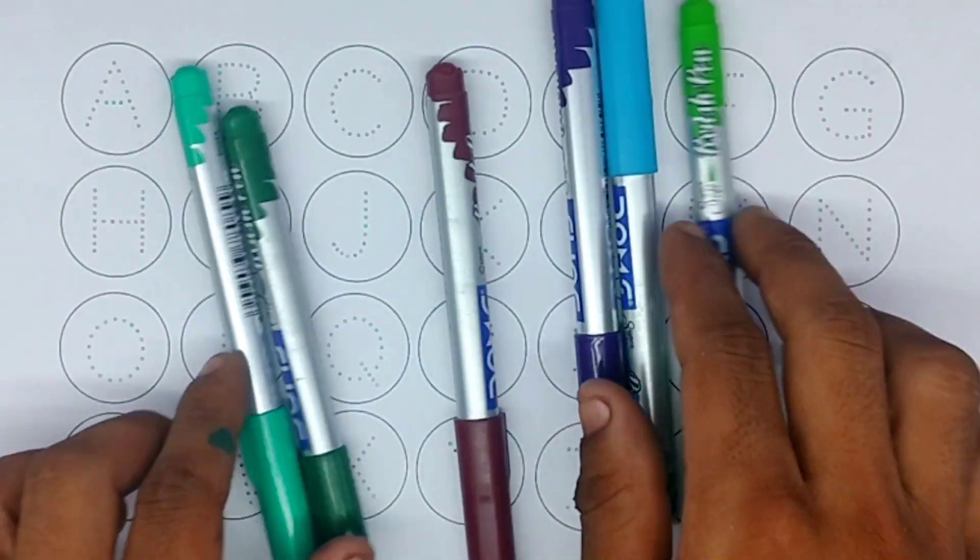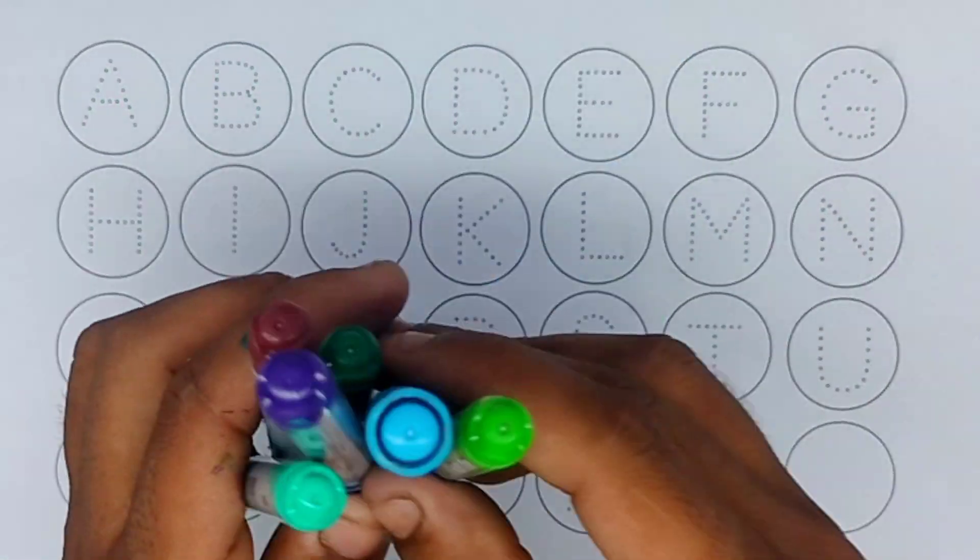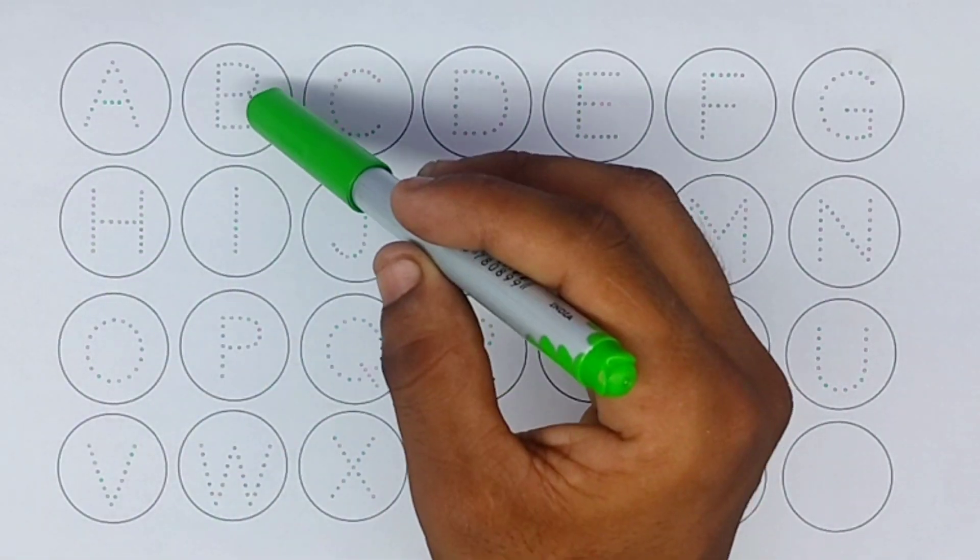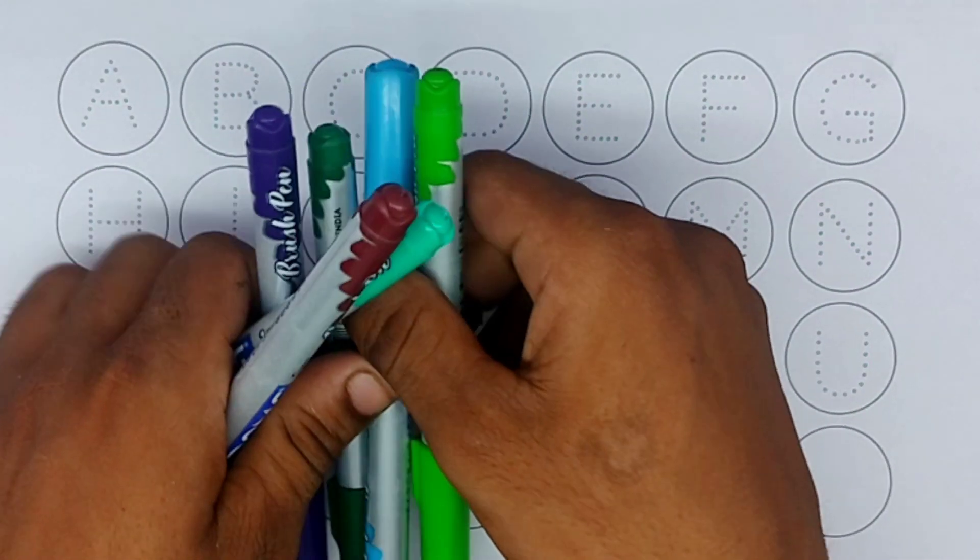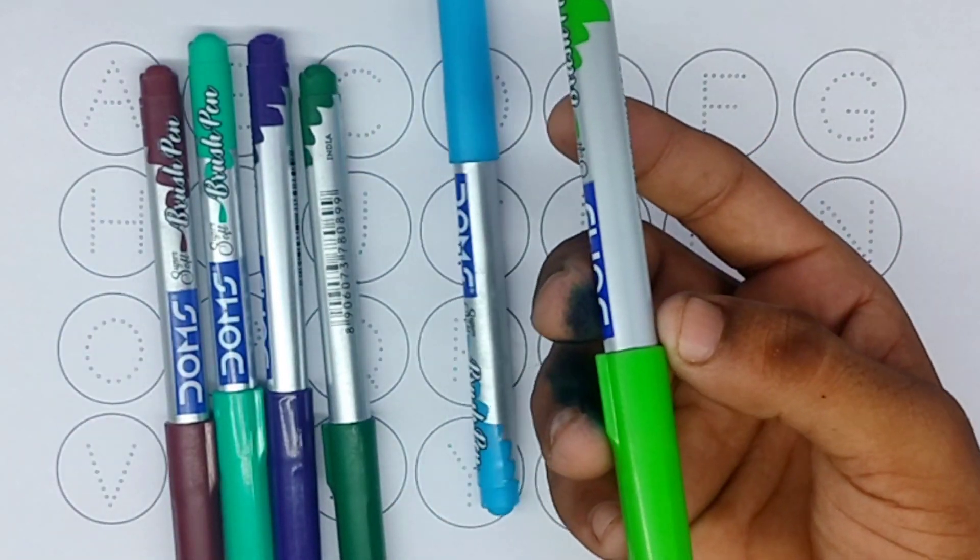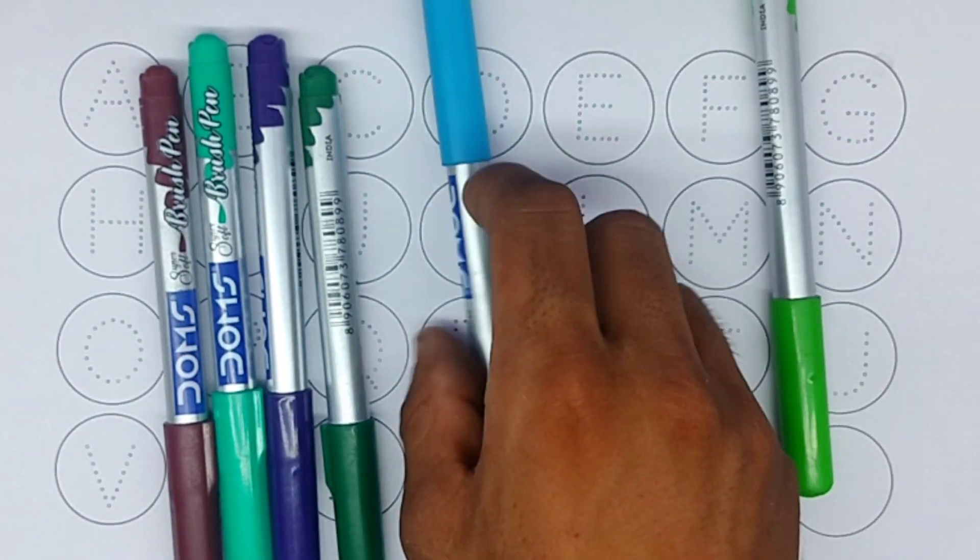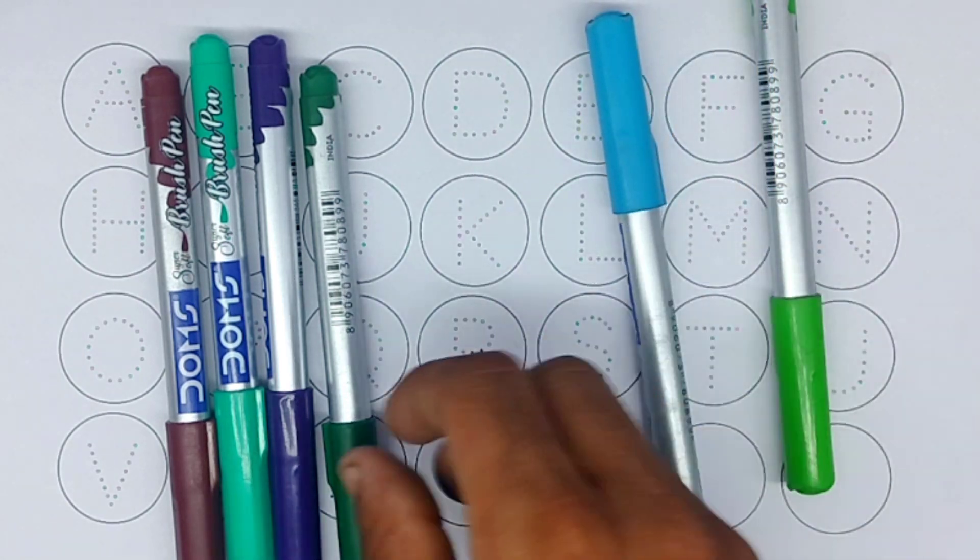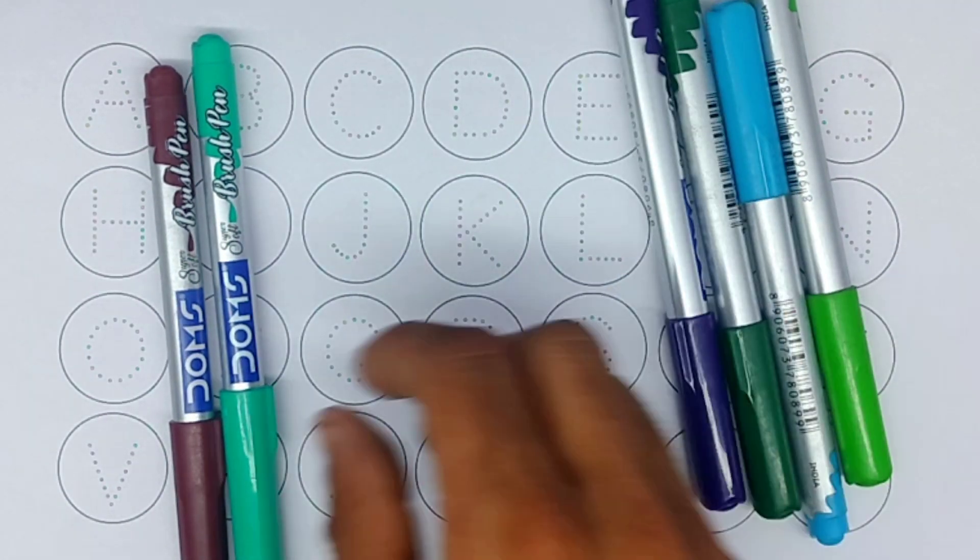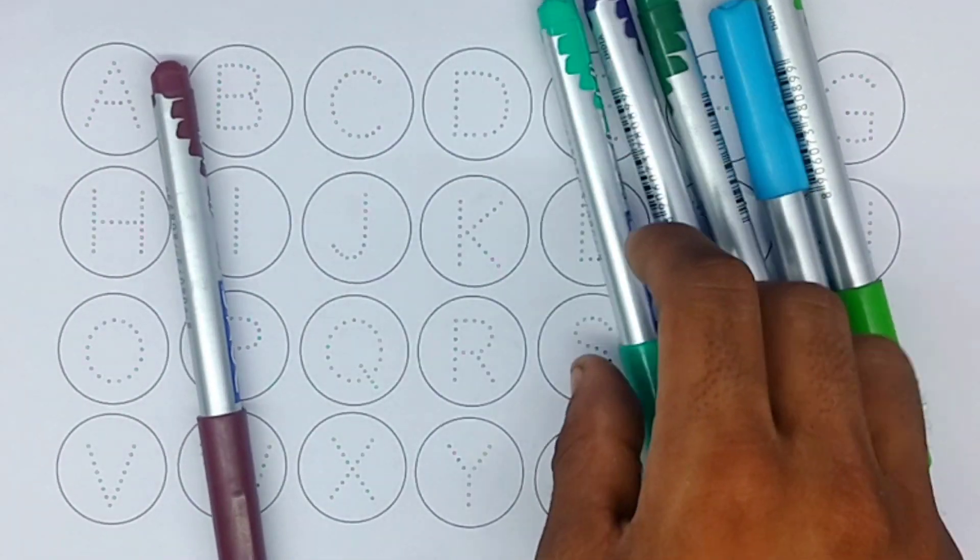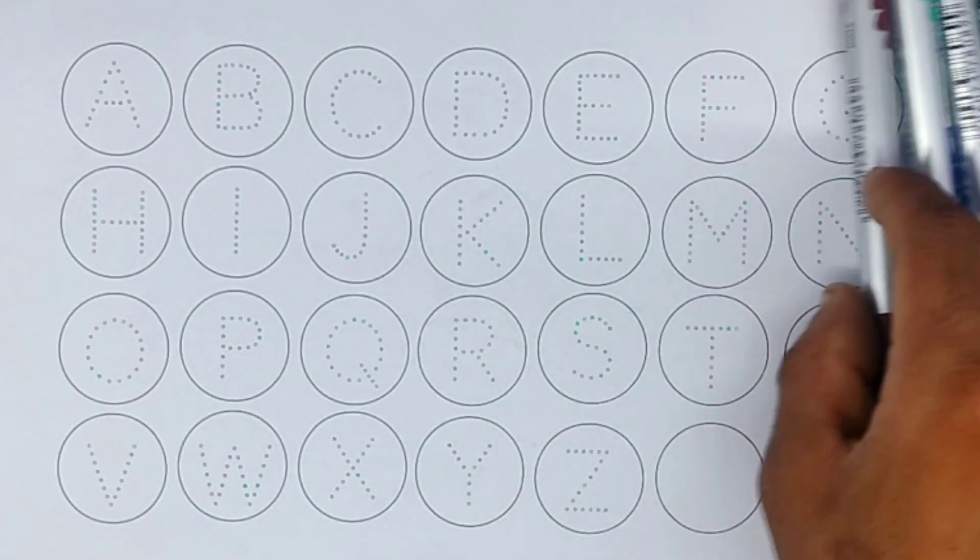Hello kids, how are you today? Learn alphabet A B C D. Colors name: red color, sky blue color, green color, purple color, light blue color, brown color.